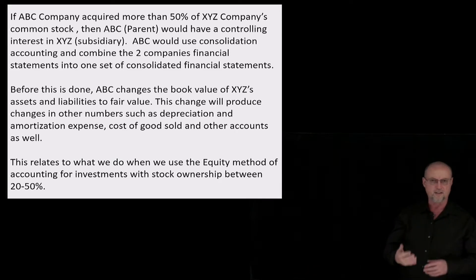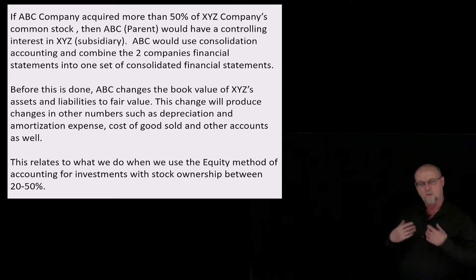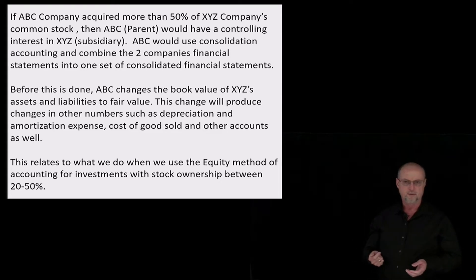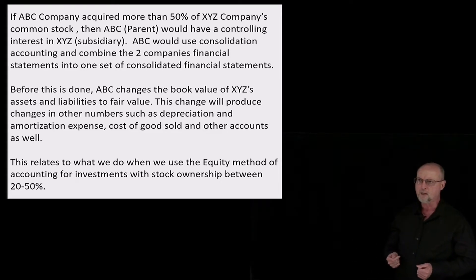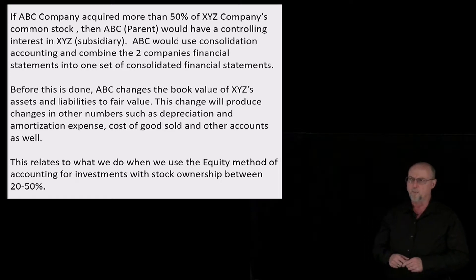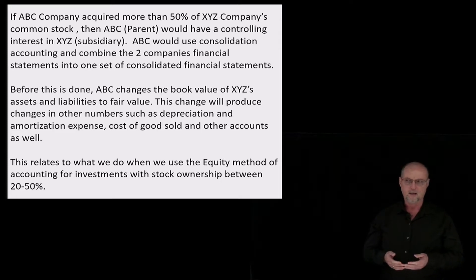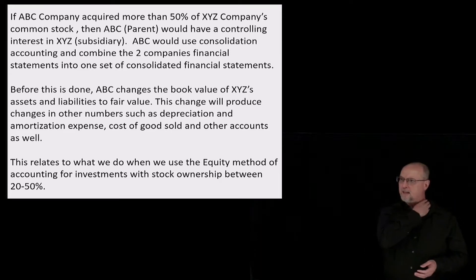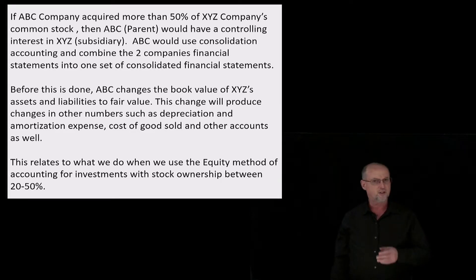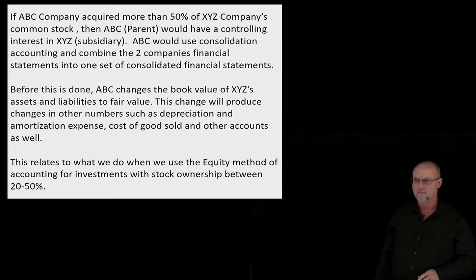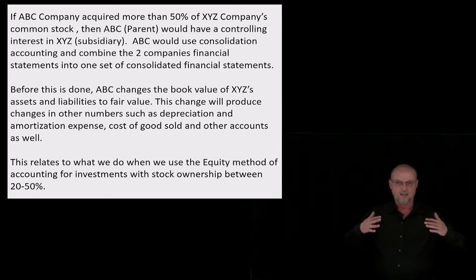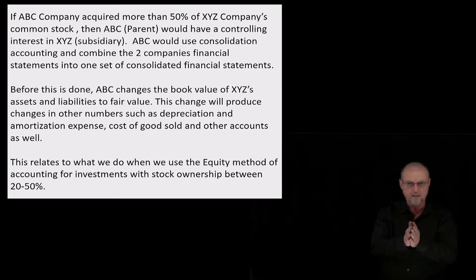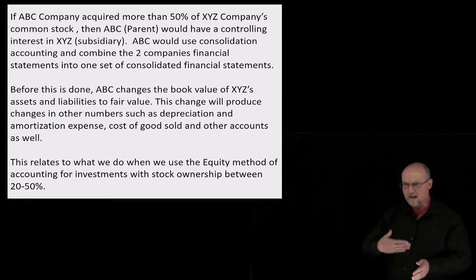If ABC Company acquired more than 50% of XYZ's stock, ABC — the parent company — would have a controlling interest in XYZ, which is now called the subsidiary. ABC would use consolidation accounting, which is a whole different area we're not going to talk about. When they prepare financial statements, they combine or consolidate the two companies' financial statements into one set of consolidated financial statements.